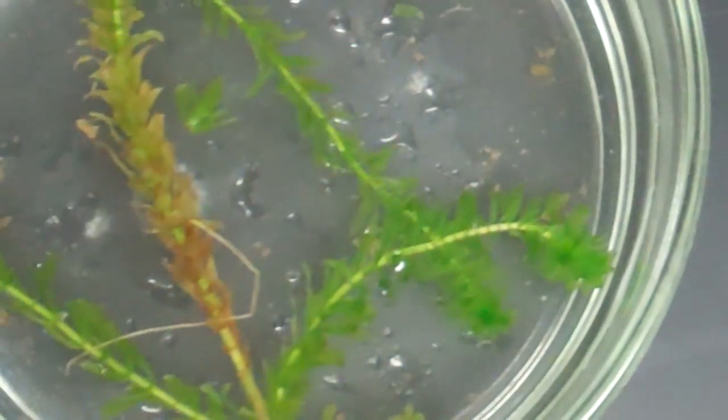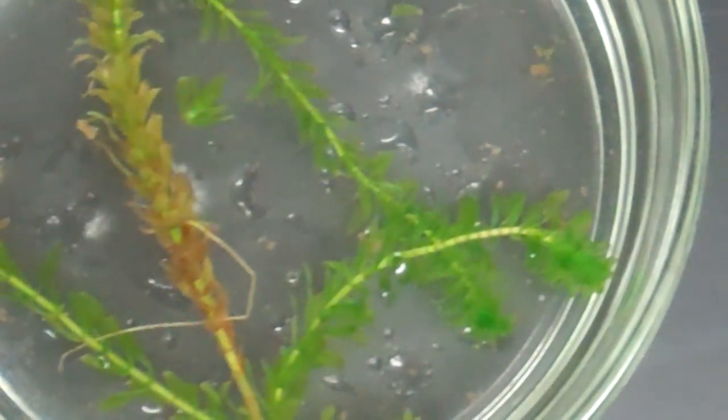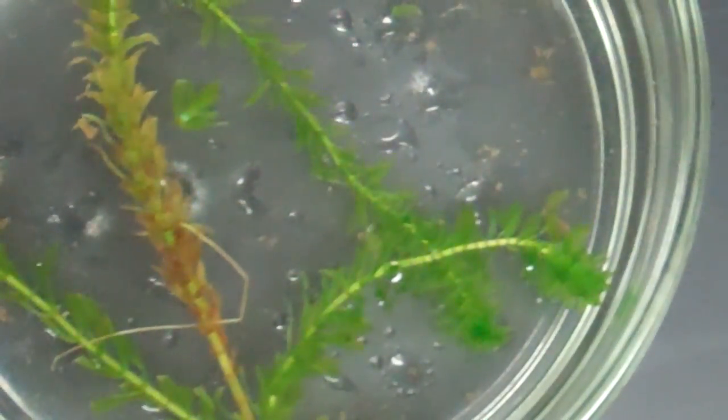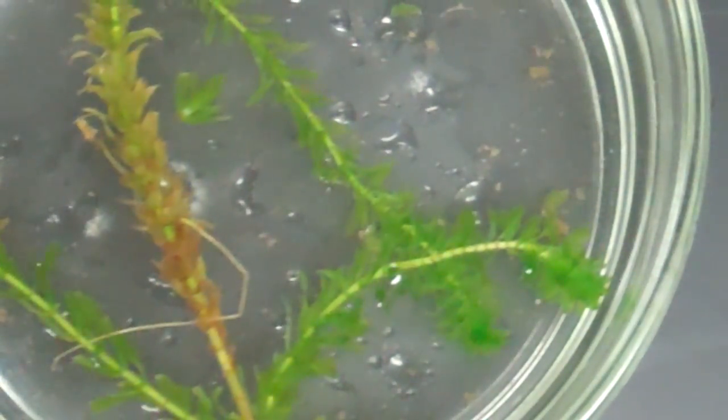This is Elodea. Elodea is a water plant and you're going to be viewing one leaf.